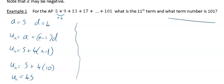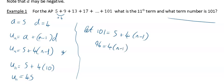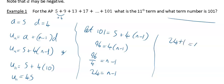Next, what term number is 101? We set 101 = 5 + 4(N − 1). Rearranging: 101 − 5 = 96 = 4(N − 1). Dividing by 4: 24 = N − 1, so N = 25. The answer is that 101 is the 25th term.